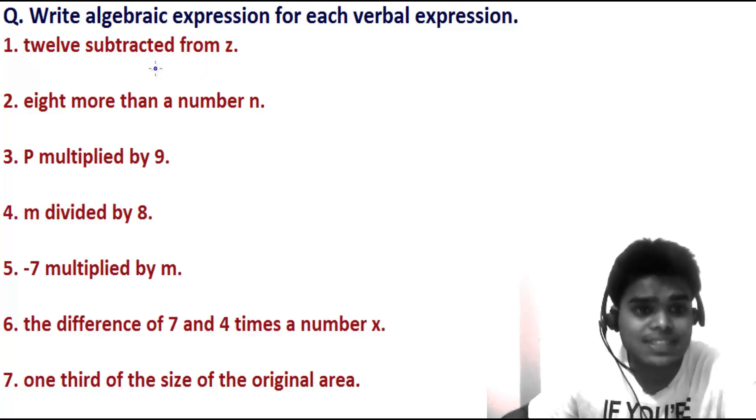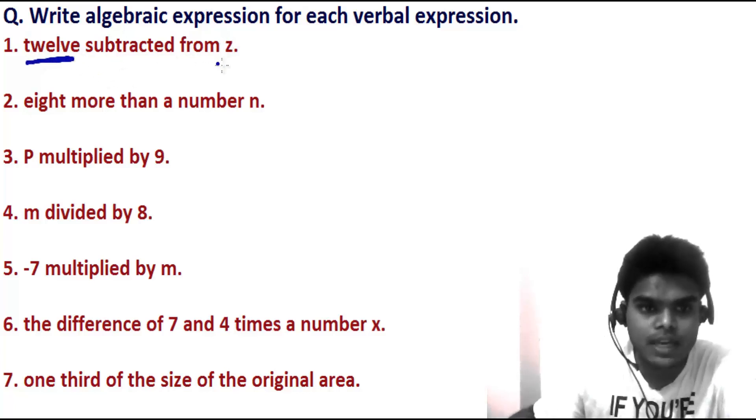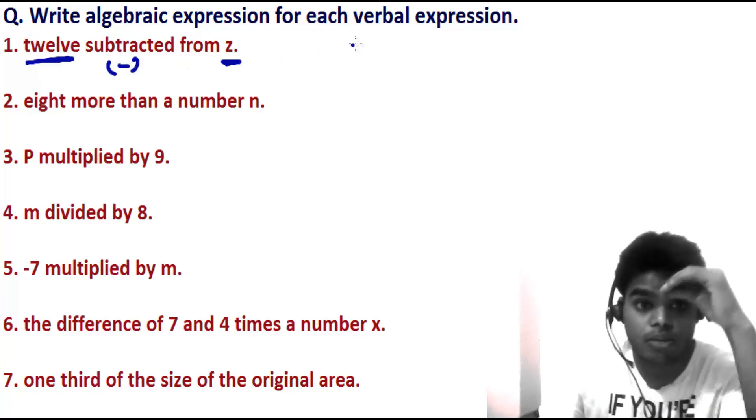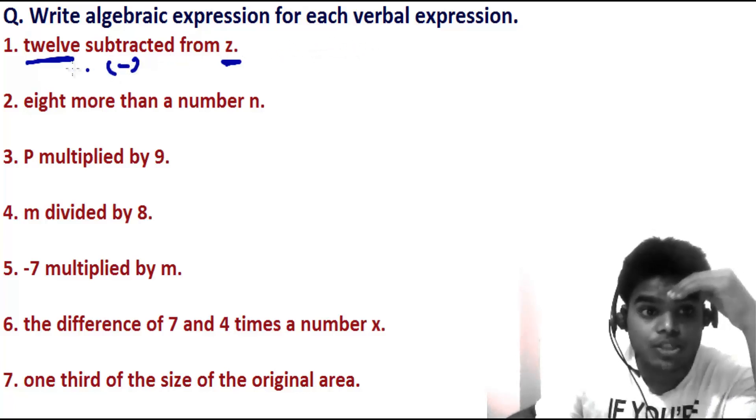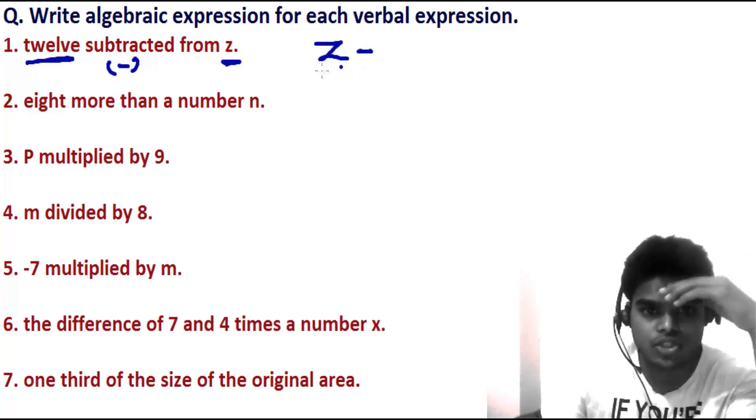Twelve subtracted from z. Here we have a number 12 and another number or variable z. So 12 is subtracted from z - subtraction is the mathematical operation for that. This means 12 subtracted from z, so from z we subtract 12: z minus 12.